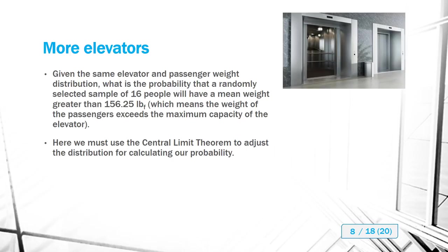Now using the same distribution and the same elevator, let's ask a different question: what's the probability that a randomly selected sample of 16 people will have a mean weight greater than 156.25 lbf? This is where the central limit theorem comes in, because we need to adjust the distribution used to calculate our probability. First, remember that the sample mean is the same as the population mean, so there's no adjustment there — it stays at 182.9.